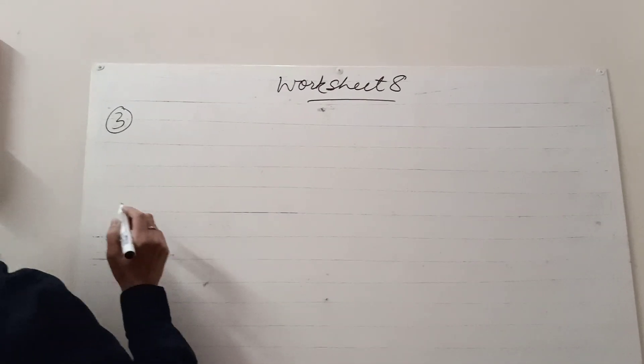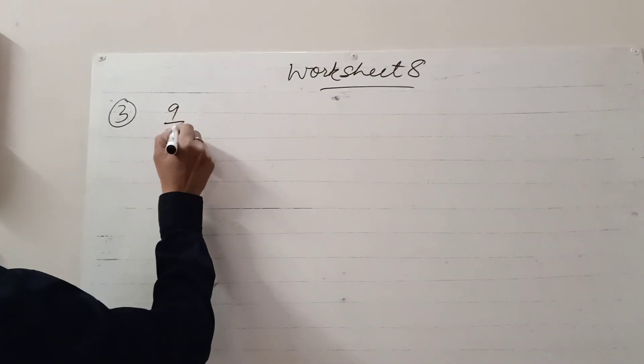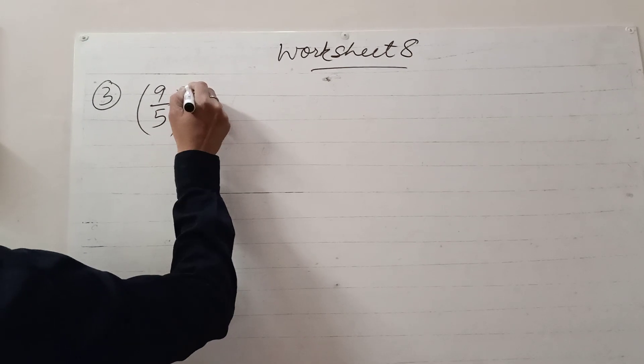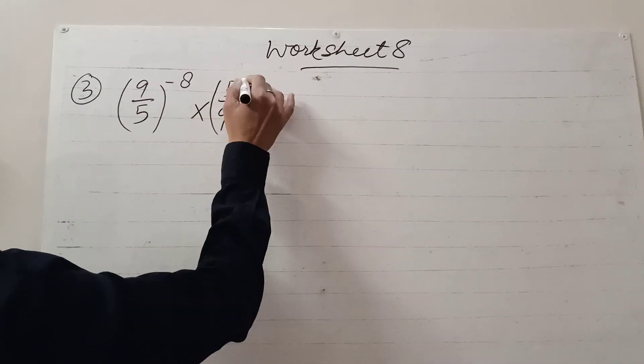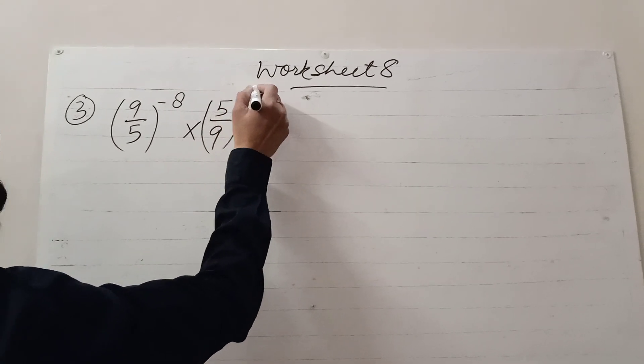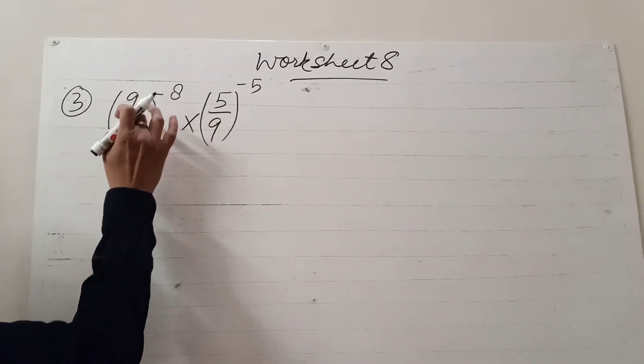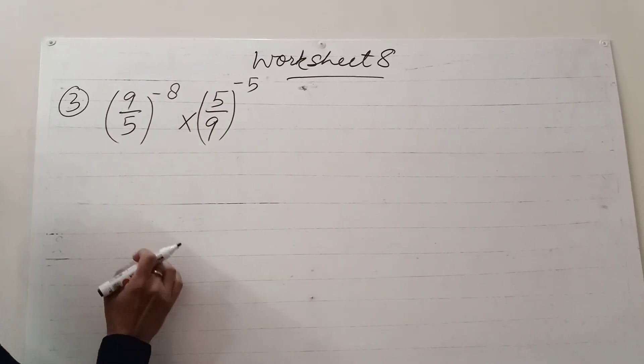Question number 3. (9/5)^-8 × (5/9)^-5. Now see, this is 9 by 5, 5 upon 9.